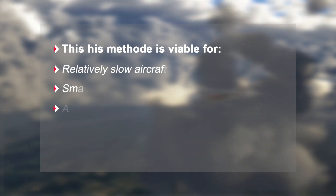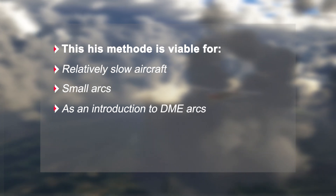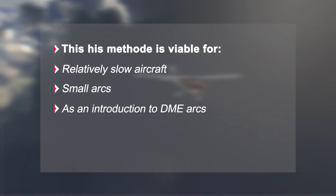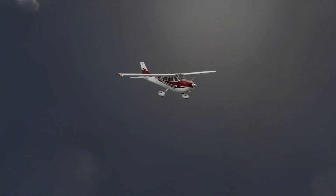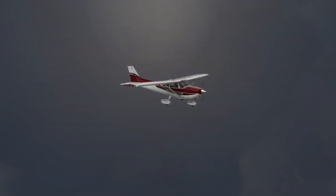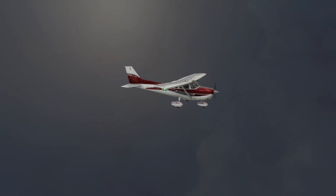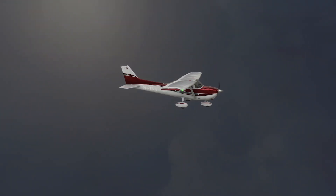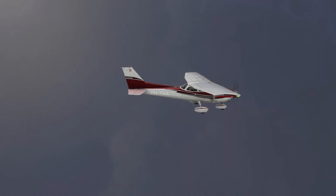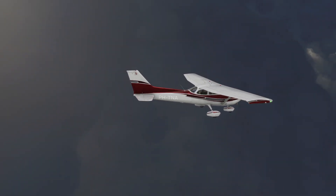Quick disclaimer: the method I'm about to show you is the so-called twist 10 turn 10 method. This is often the method taught by flight schools as it requires almost no calculation and it's the most straightforward. Is it perfect? Absolutely not — especially in fast aircraft — but since you don't start your instrument rating on a jet but rather on a small single or twin engine piston airplane, this method is perfectly suited to learn the grasp of DME arc.